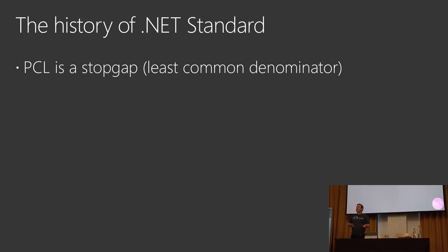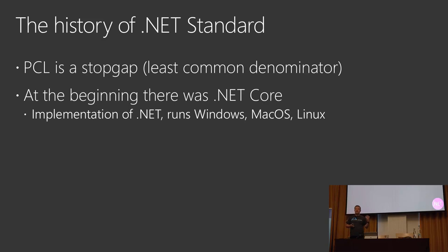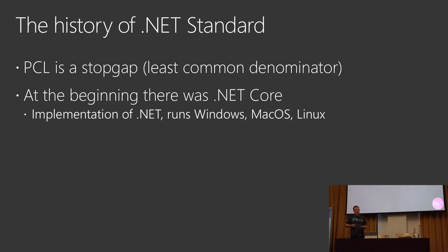So the .NET team decided to do something else. They were going to start from scratch and think about cross-platform compatibility in a different manner. And so they decided to implement .NET Core. .NET Core is an implementation of .NET. In the beginning, .NET Core 1.0 was a very small implementation of .NET — they just had a few APIs, just what was needed to do a simple website and maybe some console applications. But on the plus side, they were able to make it run on Windows, macOS, and Linux without changes.